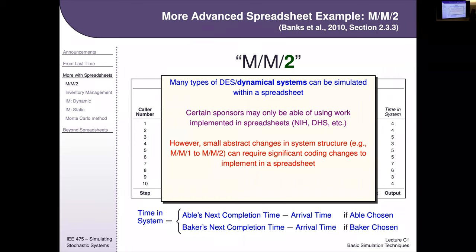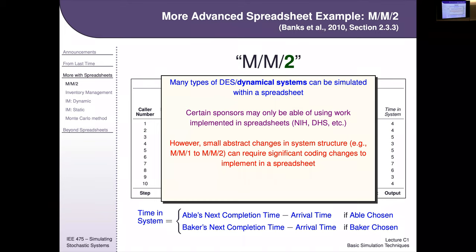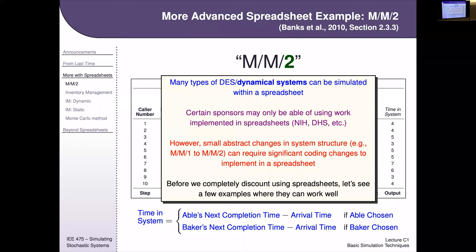The downside of spreadsheet frameworks is that even small structural changes are a major overhaul. Going from MM1 to MM2 — just adding another server — was a huge change to the spreadsheet logic. In ARENA, you just change a capacity or add a wire and suddenly you've got another server. We'll leave spreadsheets behind as we move into more sophisticated simulation packages for the rest of the semester.